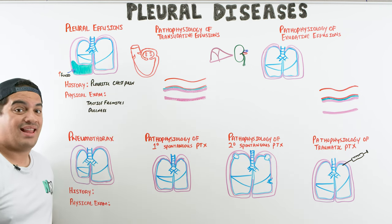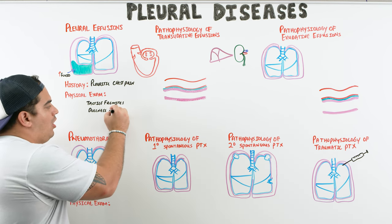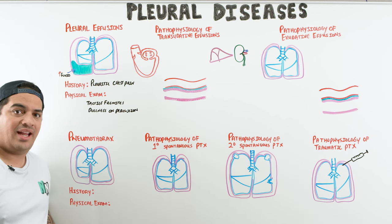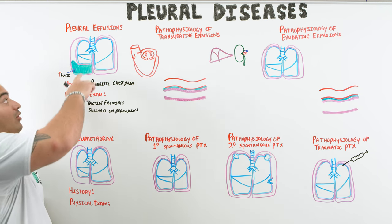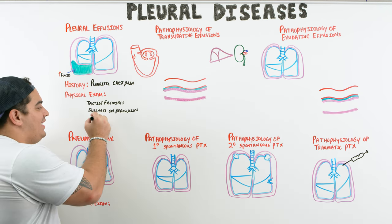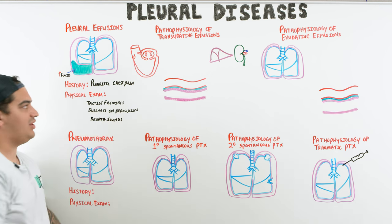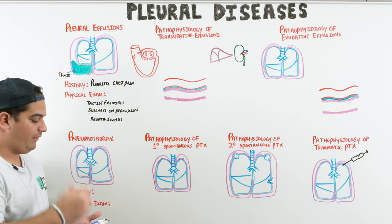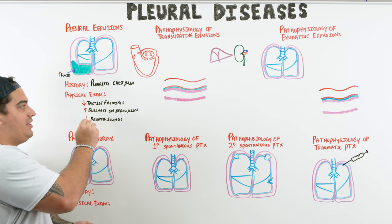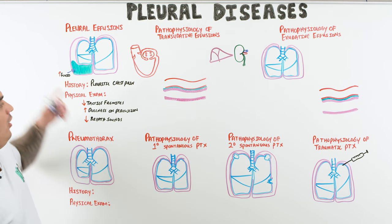Dullness to percussion suggests fluid or consolidation. On auscultation over the pleural effusion, lung sounds will be decreased. So the classic findings are: decreased tactile fremitus, dullness on percussion, and decreased breath sounds, combined with pleuritic chest pain.